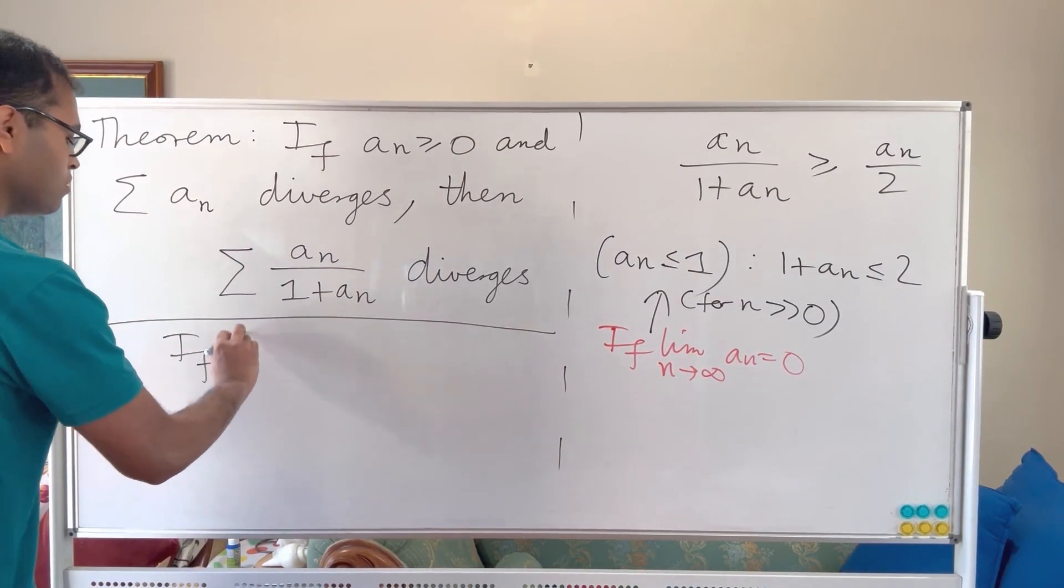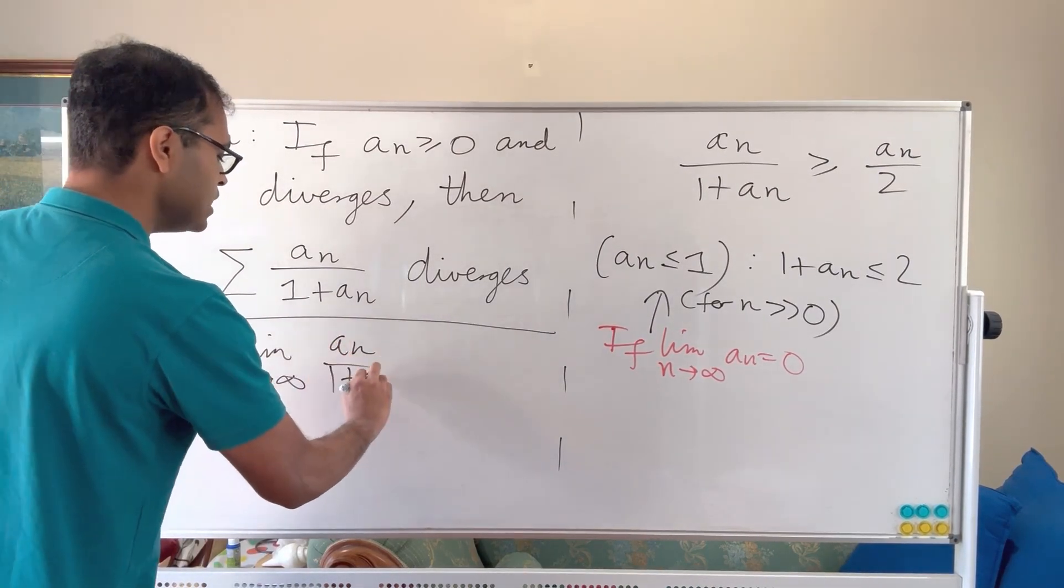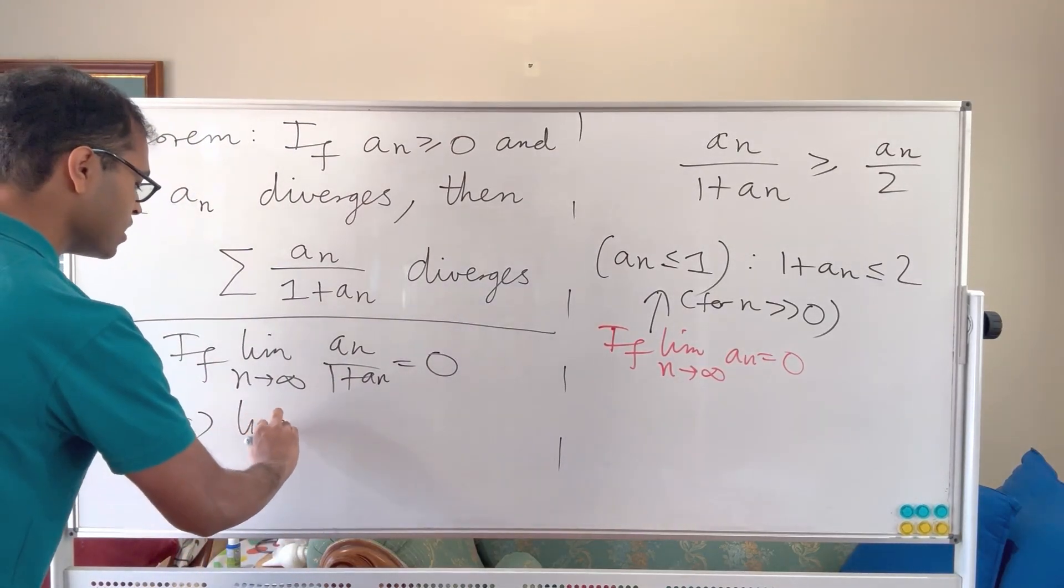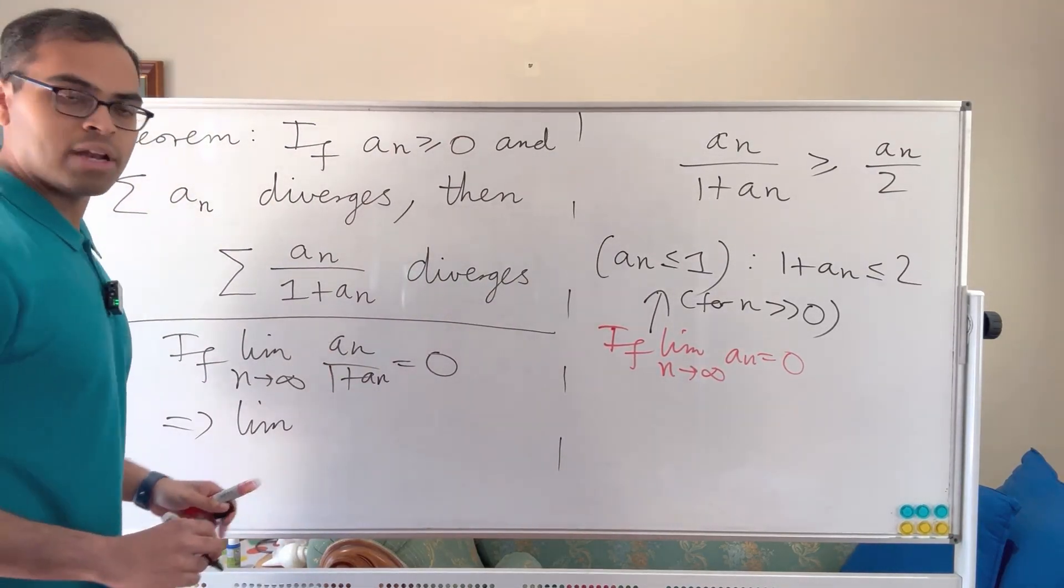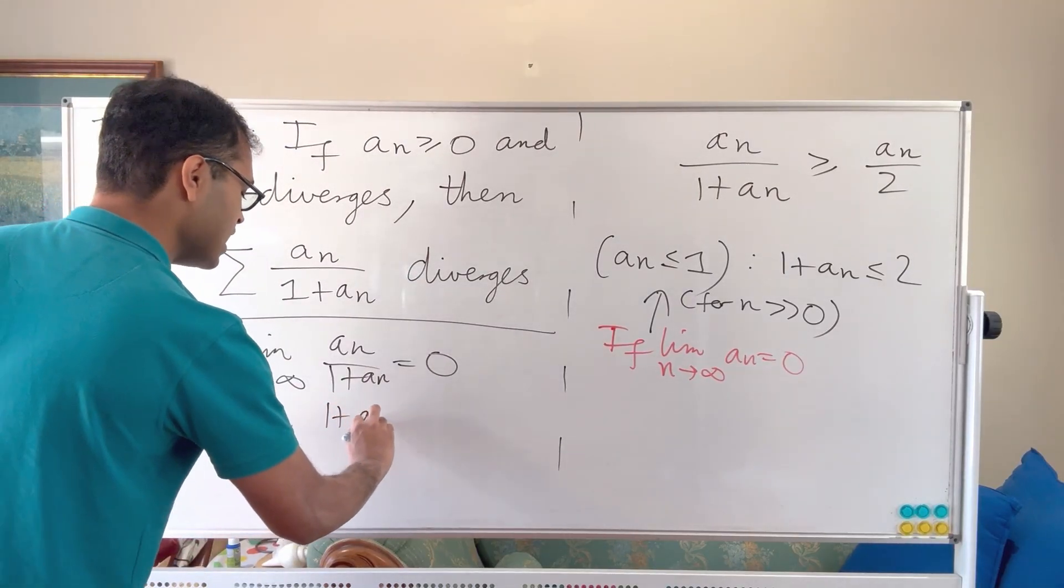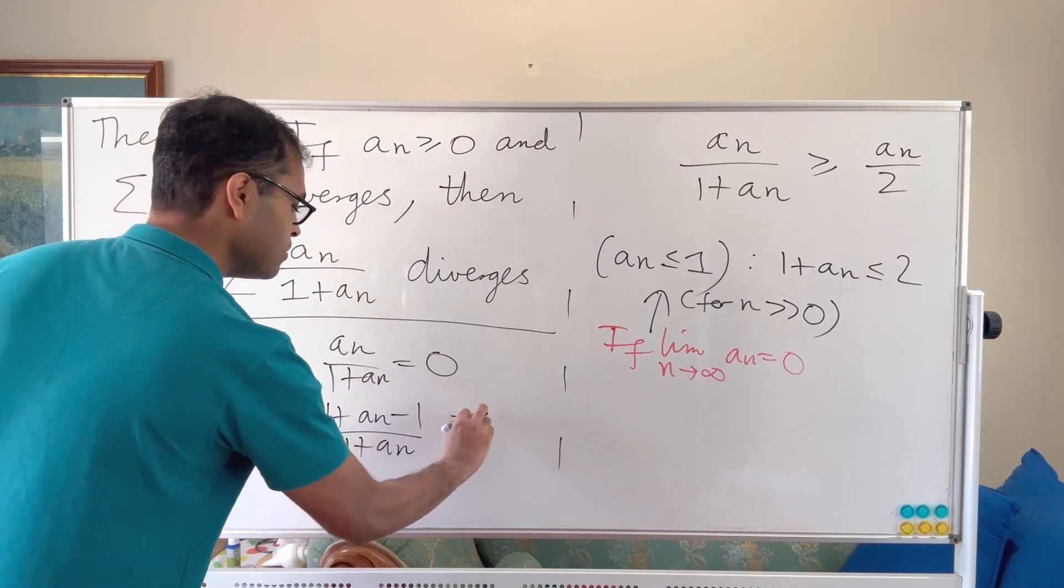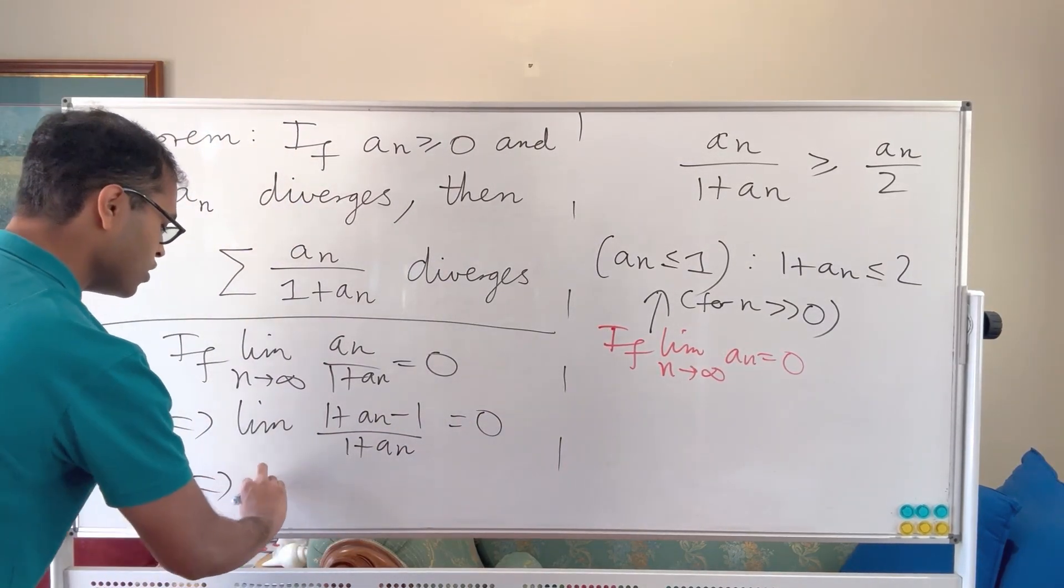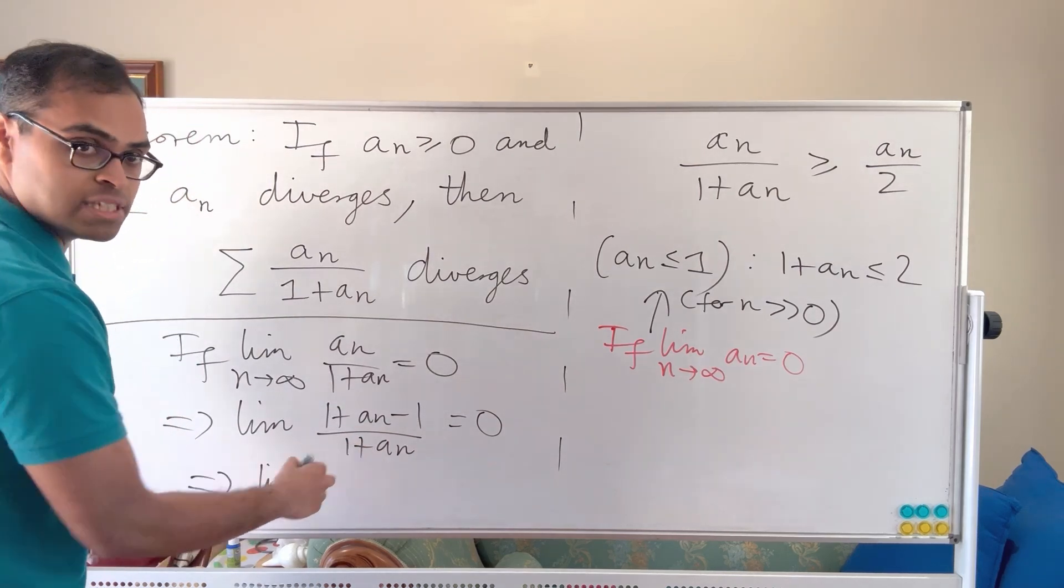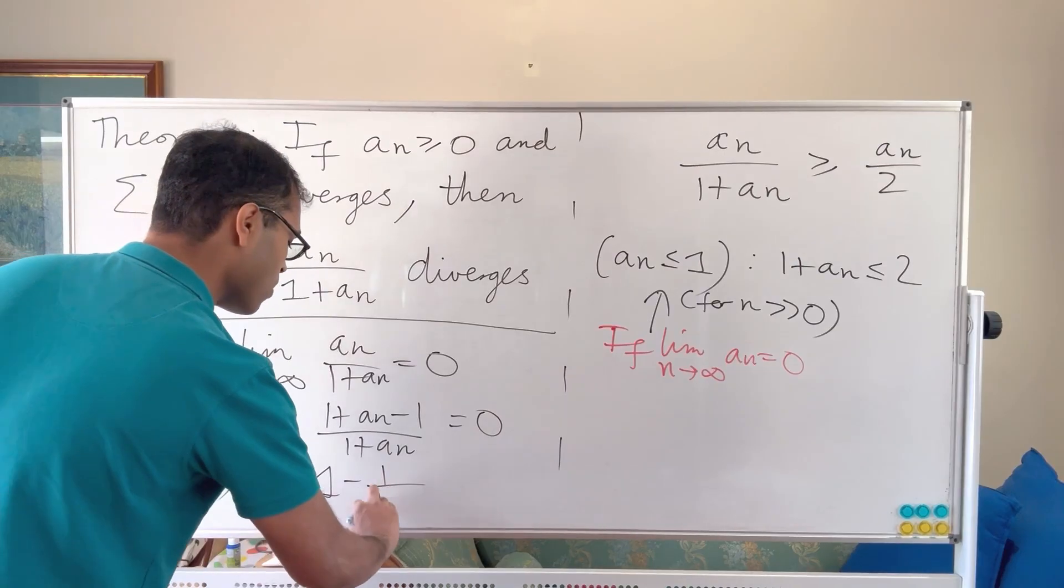If limit n goes to infinity of an over 1 plus an is equal to 0, what does that mean? Well that means that the limit, I can write this out a little differently, an over 1 plus an I can add 1 subtract 1 so I can say this is 1 plus an minus 1 over 1 plus an. That limit is equal to 0 and now we're going to say this is 1 plus an over 1 plus an, which is equal to 1, and then we could say minus 1 over 1 plus an.